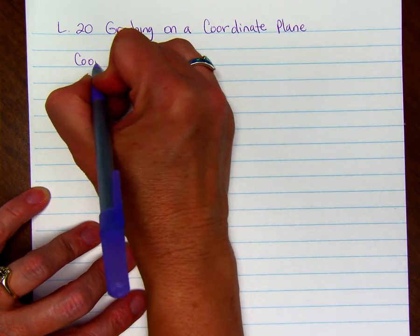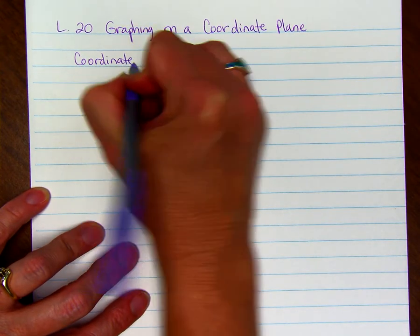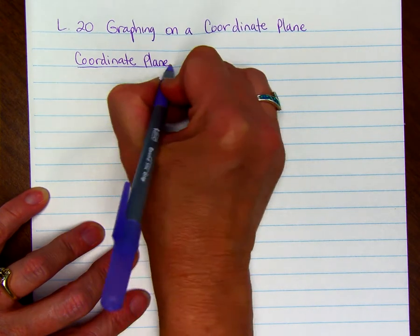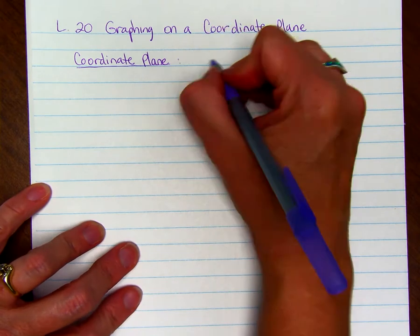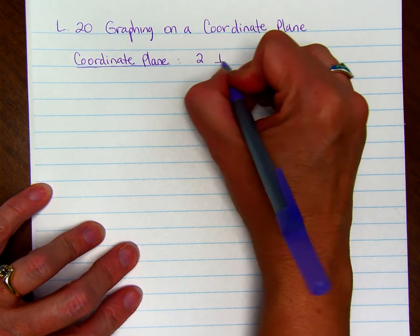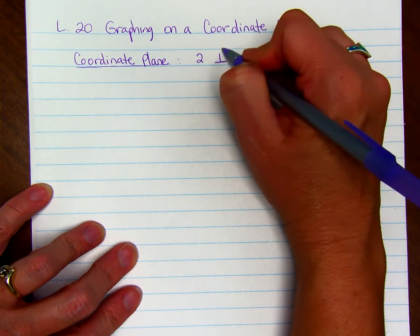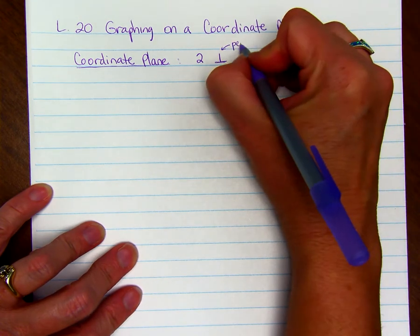A coordinate plane is basically two number lines that are perpendicular. So they are two perpendicular number lines. This little symbol right here, the upside down capital T, stands for perpendicular.